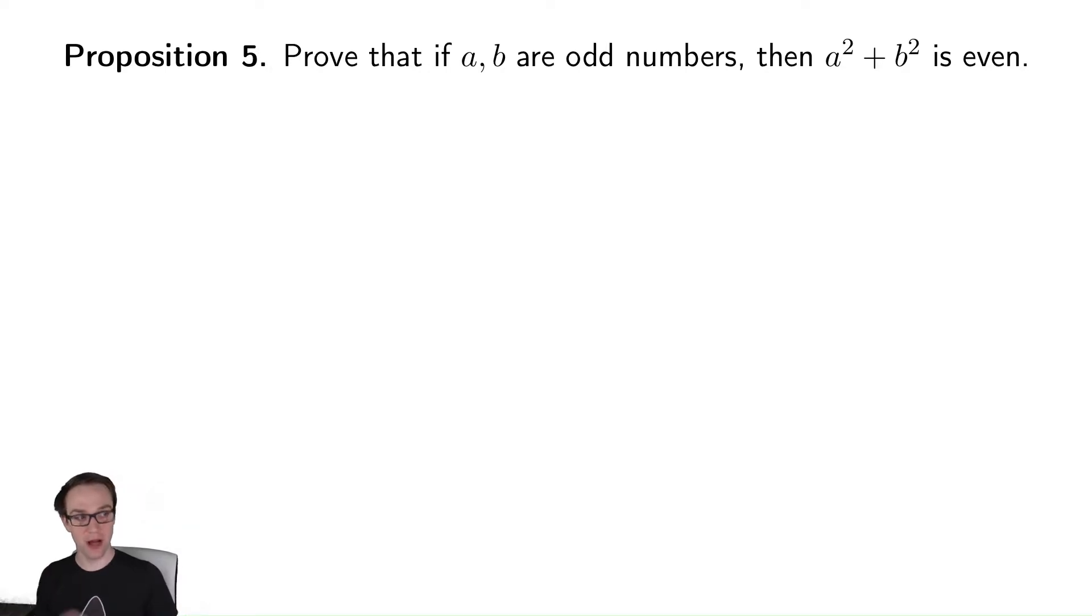So our next one says that if you have two odd numbers and you add their squares, you get an even number. So prove that if a and b are odd, then a² + b² is even.